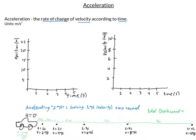If my acceleration is 2 meters per second squared, for every second the velocity increases by 2 meters per second. So from 2 seconds to 3 seconds, I go from 4 meters per second to 6 meters per second. Go another second, the velocity goes up by 2 more meters per second, and so on.